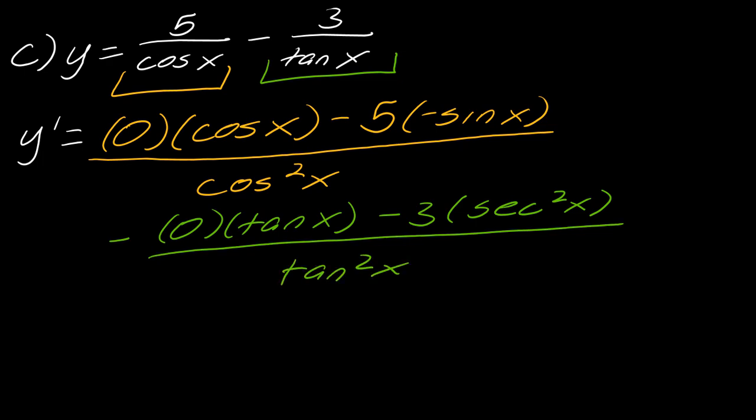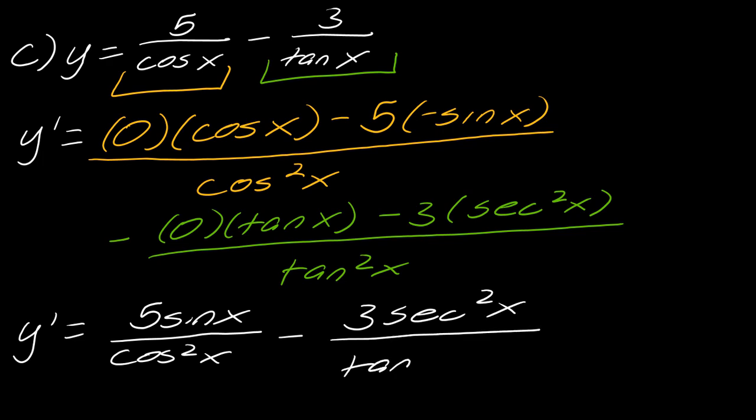So for this one, I will go ahead and simplify everything. So when all is said and done, this is actually going to be five sine x over cosine squared x. And then, let's see, this will be minus three secant squared x over tangent squared x. So that was kind of a tricky derivative.